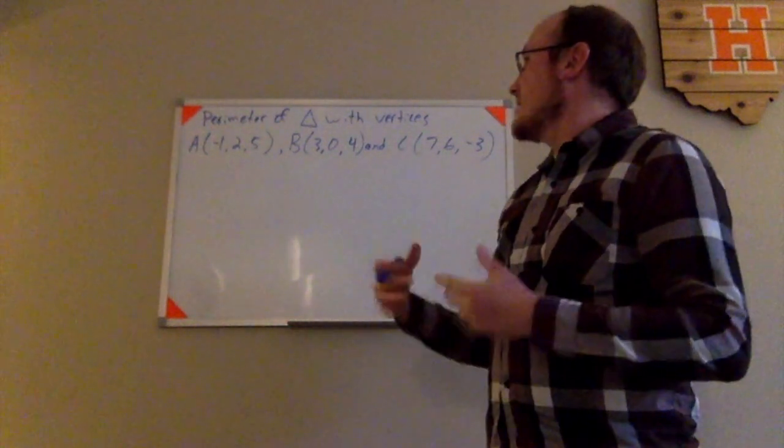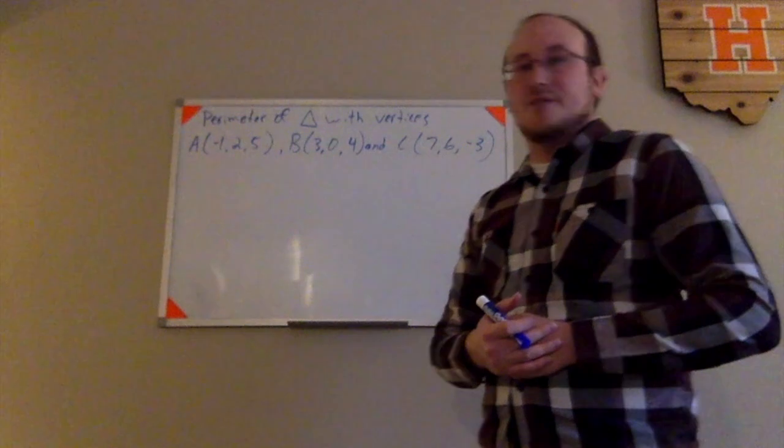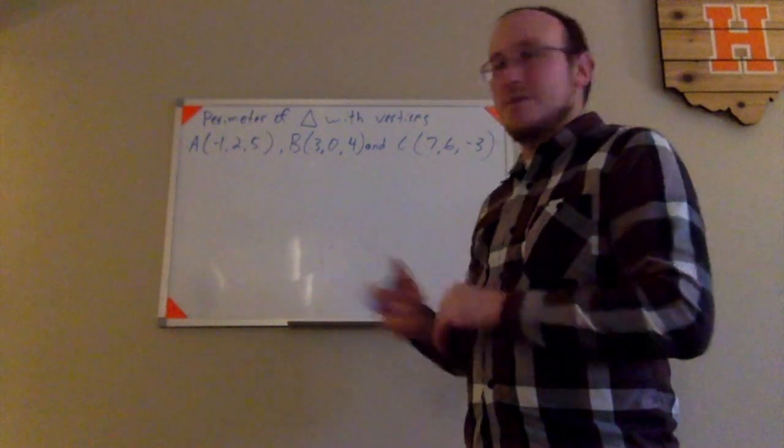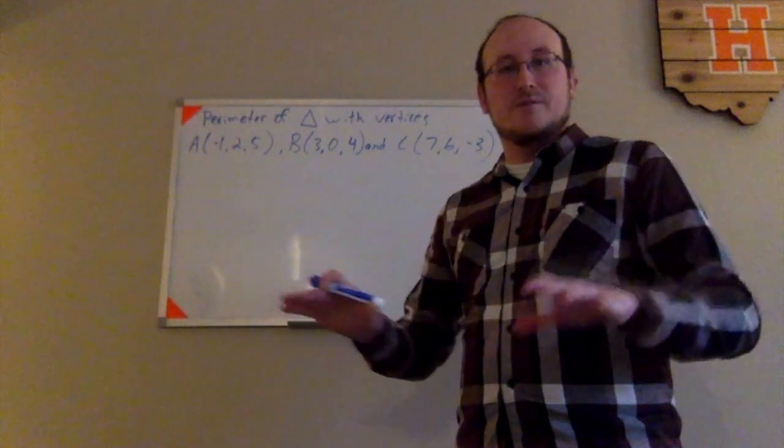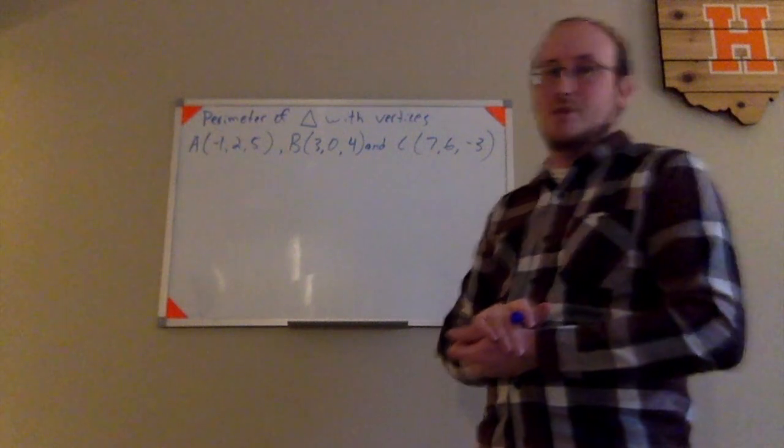Now let's look at a problem that wants us to find the perimeter of a triangle with given vertices in a three-dimensional space. The good news is that any three points in three-dimensional space will uniquely define a plane. They will all be in the same plane. You can remember that from geometry. It takes three points to determine a unique plane.